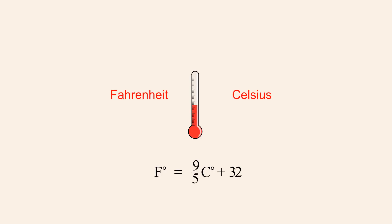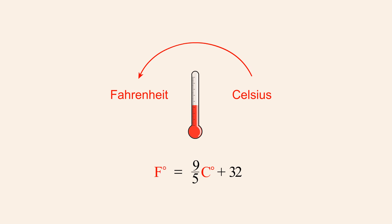Likewise, literal equations may involve only two variables, as in the formula to convert temperature in degrees Celsius to Fahrenheit. In this formula, the variables are C, which represents the temperature in degrees Celsius, and F, whose value is the temperature in degrees Fahrenheit.